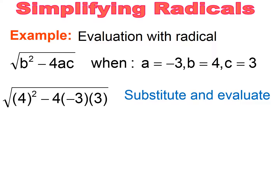A key note here is we cannot take the square root until we have this evaluation down to one number. So inside, I want to perform the operations so that it becomes one number, but the radical will stay. The first thing I'm going to do is square that 4, and it's going to be 16. Then I have a negative 4 times a negative 3 is 12, positive 12, times 3 is a positive 36, so I end up with plus 36.